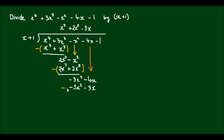And again, I subtract this new line from the line above it. So negative 3x squared minus minus 3x squared will give me zero. Minus 4x minus minus 3x will give me minus x. And I'll bring down this minus 1.